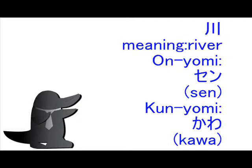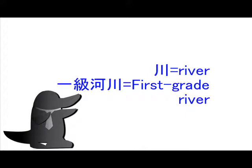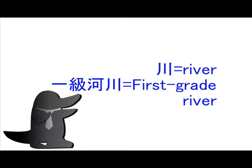There is no okurigana for this kanji. In Japan, we study this kanji starting right at elementary school. An example word is 'kawa,' meaning river. Another example is 'ikiu ka sen,' meaning 'first great river.'